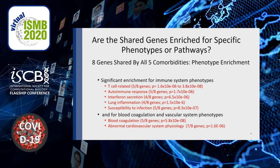We did phenotype enrichment analysis using the mammalian phenotype data in the Mouse Genome Informatics system, and these are the two significant enrichments that we found. One is for immune system phenotypes, including things like autoimmune response and interferon secretion — not unexpected given what we're coming to know about the impact of COVID-19. And secondly, for blood coagulation and vascular system phenotypes, consistent with much emerging information about blood system diseases in the presentation of COVID-19.